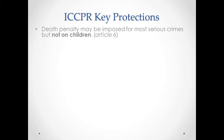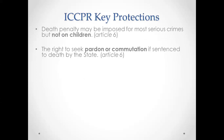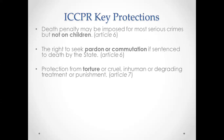There is specific language around the right to seek pardon or commutation, particularly if sentenced to death by the state. Article 7 covers torture, cruel, inhumane, or degrading treatment or punishment — covering all areas of deprivation of liberty, whether in the criminal system, the immigration administrative system, or other settings where persons are being deprived of liberty. There are also specific prohibitions against slavery and servitude.